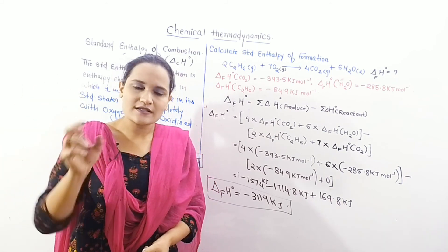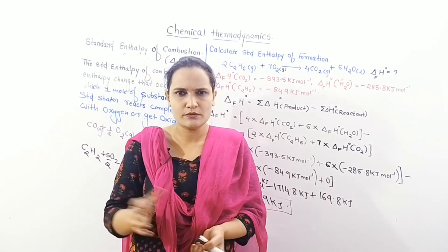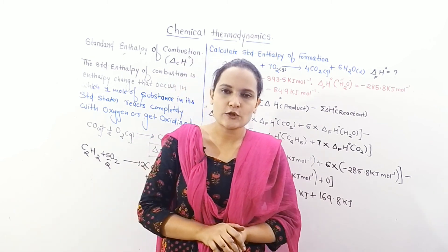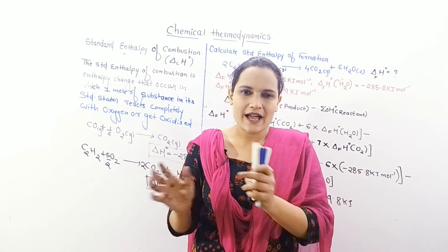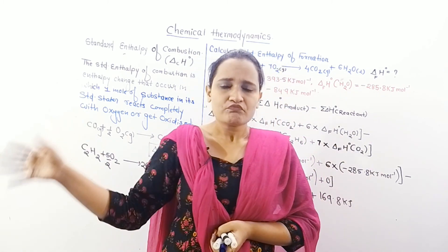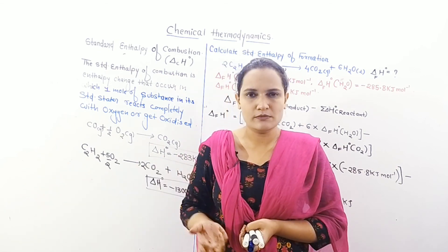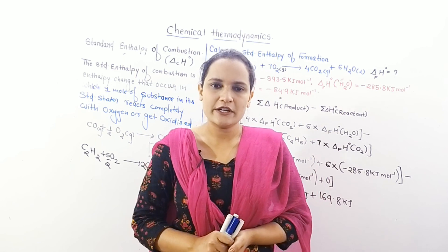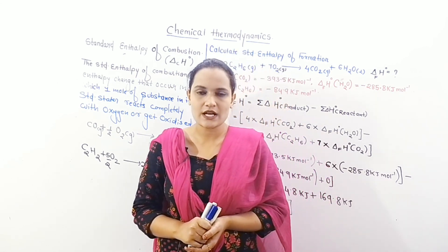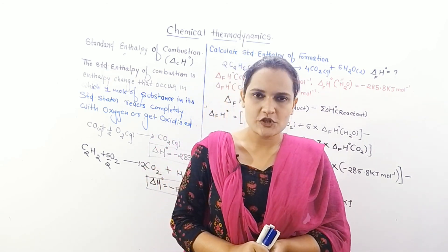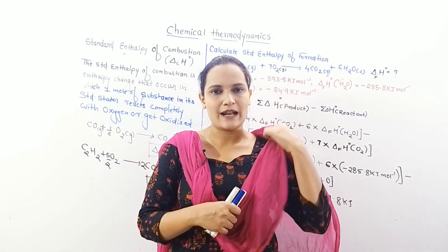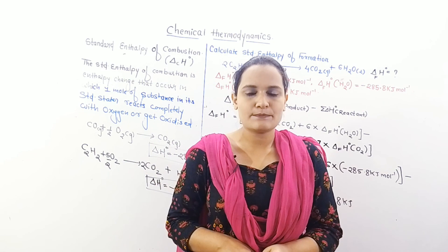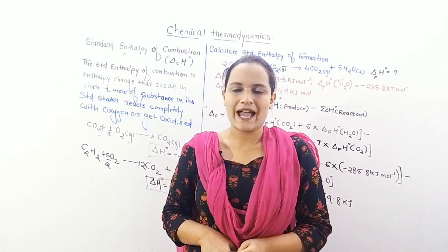Any reaction where one mole of substance reacts with oxygen, is oxidized, or completely burns, is called standard enthalpy of combustion. For instance, methane reacting with oxygen gives carbon dioxide and water — that is also standard enthalpy of combustion. Any reaction releasing a large quantity of heat, like burning methane or ethane, is termed standard enthalpy of combustion. Today we covered standard enthalpy of formation and combustion, including a numerical on formation. In the next lecture, we will see what is spontaneous process, entropy, and the relationship between energy and spontaneous processes.